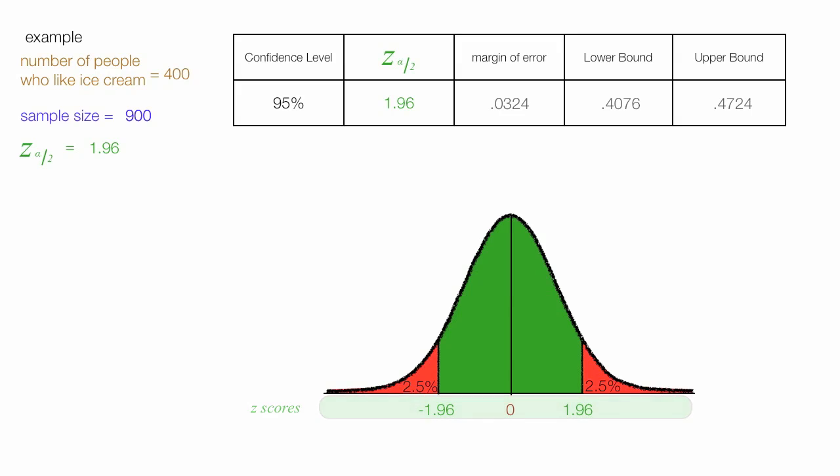You're probably not digging this, but hey, I just want you to pass stats, so hang in there. So here at the middle of it is 0.44, which is the proportion. To the right is 0.4724, and to the left, as you're probably guessing, is 0.4076. And this is the confidence interval.